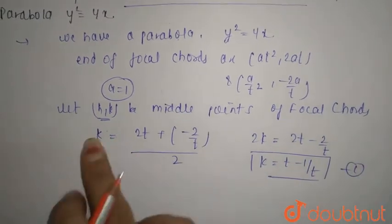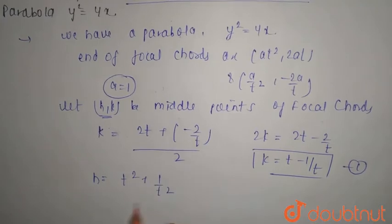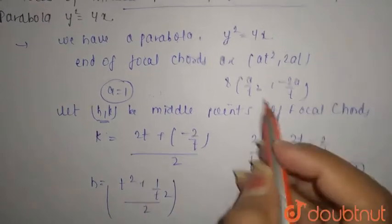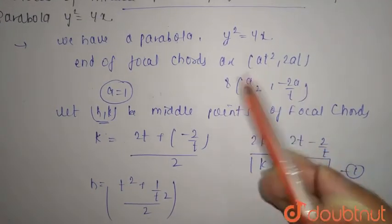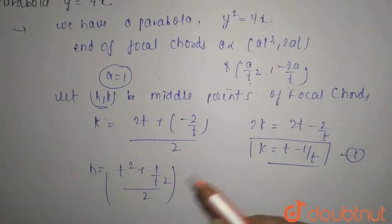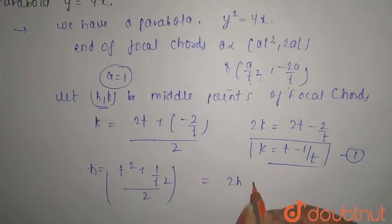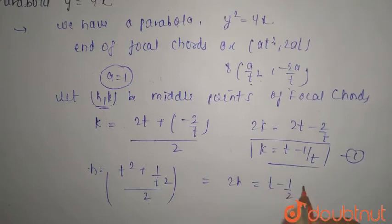Now for h, h = (t² + 1/t²)/2. Multiplying by 2 gives 2h = t² + 1/t². This can be rewritten as 2h = (t - 1/t)² + 2.